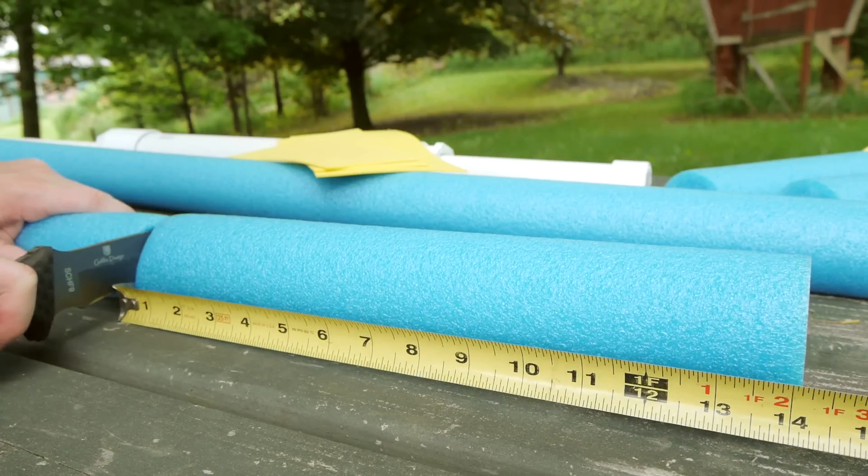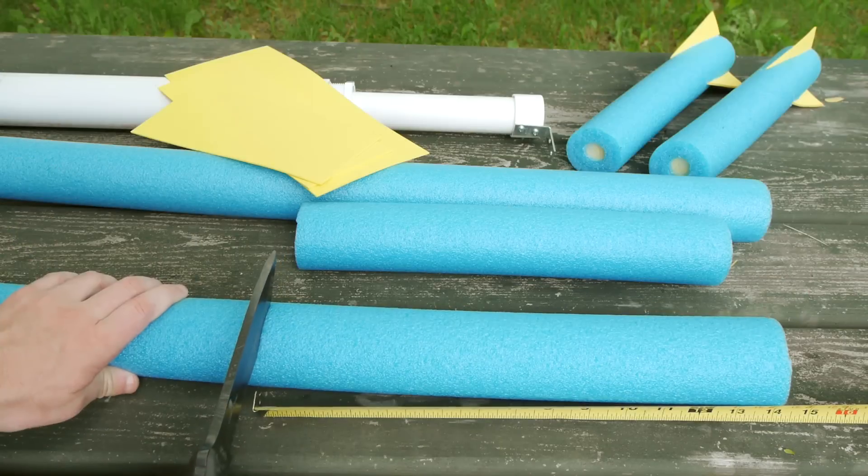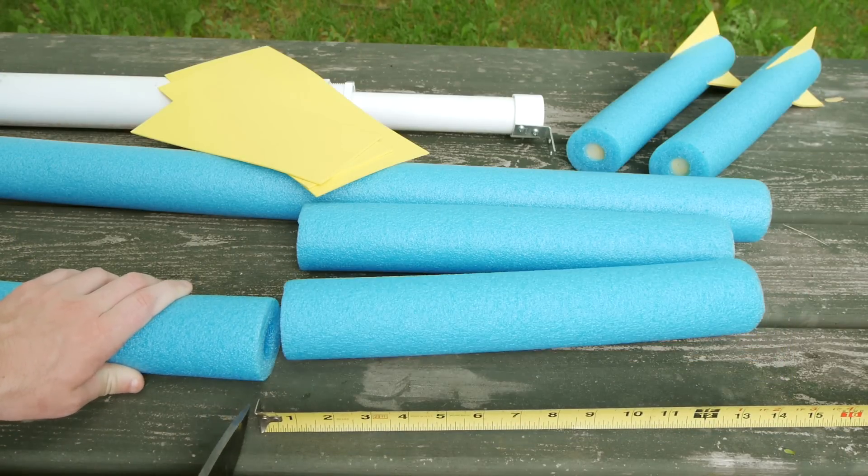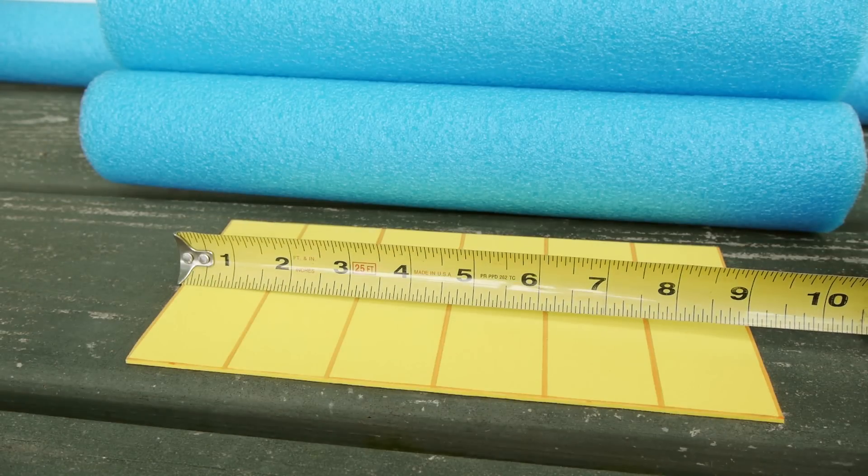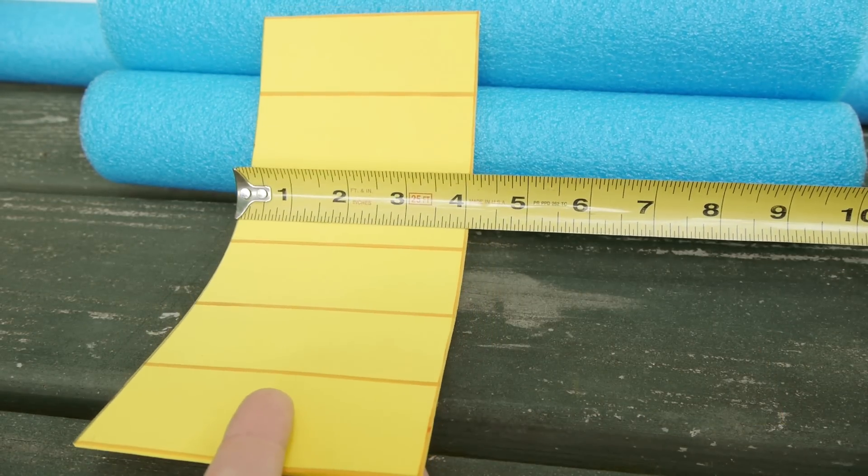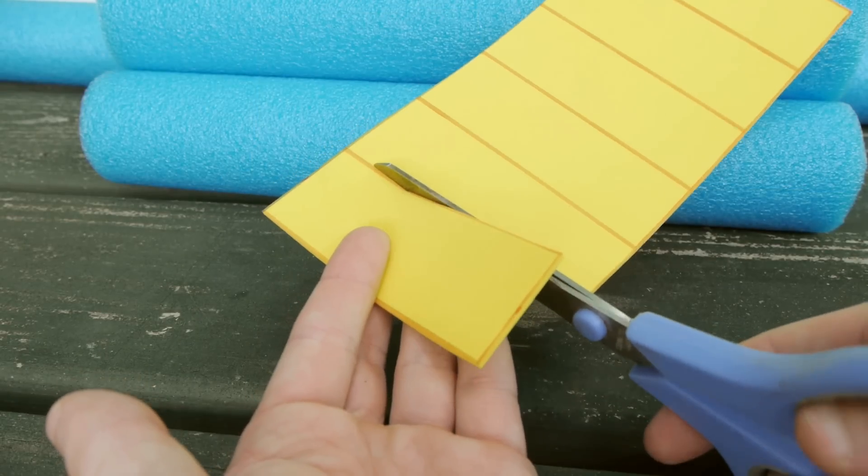The noodles are measured and cut into 14 inch lengths, which should divide them evenly to make 4 rockets each if the noodles are of the standard size. The craft foam is then measured and marked as a series of rectangles approximately one and a half by four inches in length, which are cut individually.